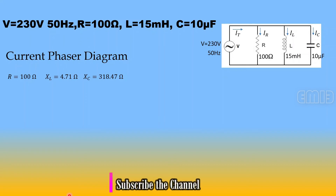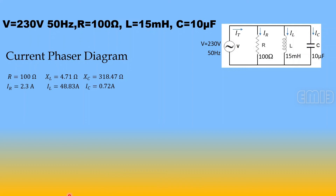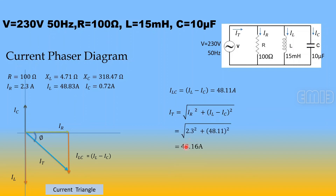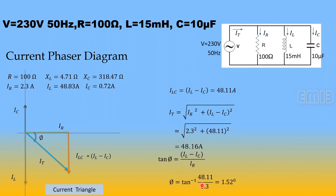For the phasor diagram: IR = 2.3 A drawn along the x-axis, capacitive current IC = 0.72 A drawn upward on the y-axis, and inductive current IL = 48.83 A drawn downward. The net reactive current ILC = IL − IC = 48.11 A. Total current IT = √(IR² + (IL − IC)²) = 48.16 A. Phase angle φ = tan⁻¹((IL − IC)/IR) = 1.52 degrees.